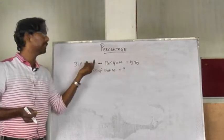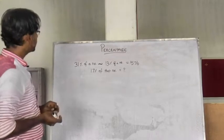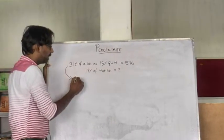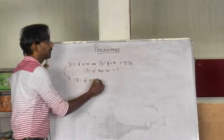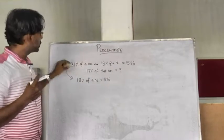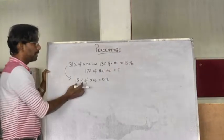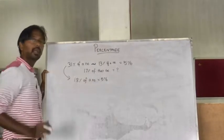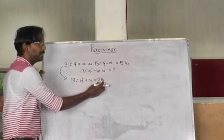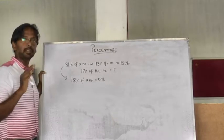The difference between 31% and 13% of a number is 576. The difference between 32% and 13% is equal to 586.